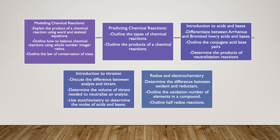We will also go over an introduction to titration. We will discuss the difference between an analyte and a titrant through lab work. We will be able to determine how the volume of a titrant is used to neutralize an analyte using an indicator, and finally we will use stoichiometry to determine the moles of acids and bases.